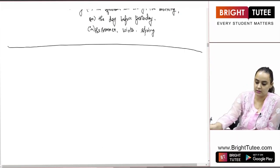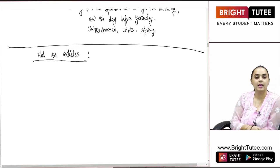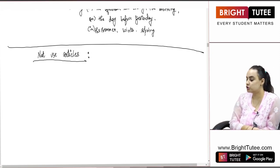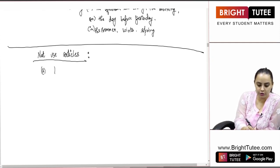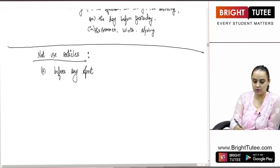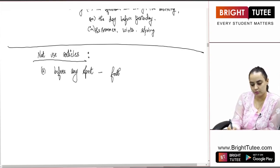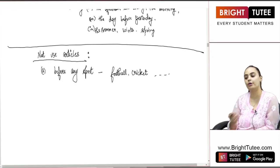Now, where do we NOT use articles? There are a few cases in which we never use articles. First case: we never use them before any sport. We will never say 'a football' or 'the football' — football always remains football without any article. Cricket, baseball, basketball, tennis, table tennis, Ludo — whatever sport you are talking about, we do not use A, AN, or THE before them.